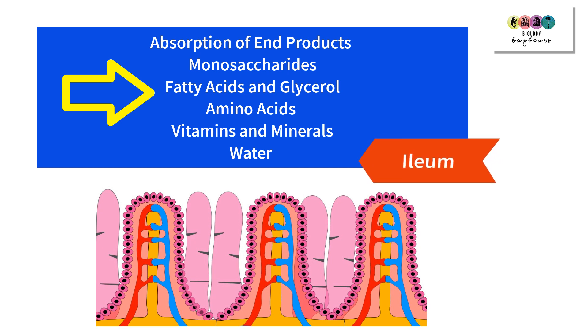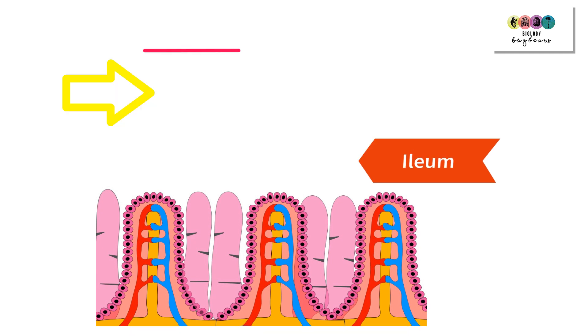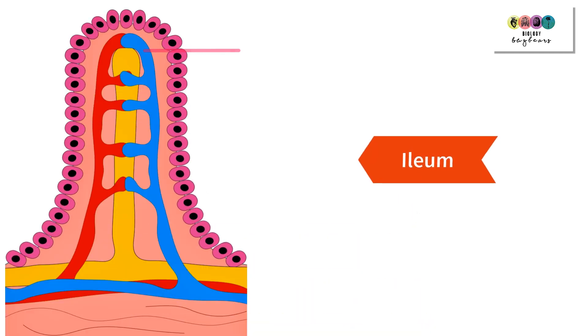We are now in the lower portion of the small intestine — the ileum — where absorption takes place. This is where the products of digestion leave the small intestine and pass into the bloodstream.